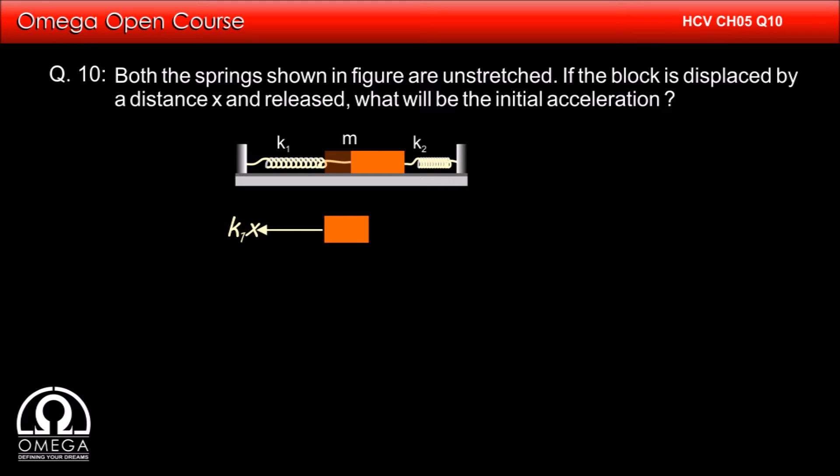Since the spring on the left is elongated by x, it pulls the block with force k₁x. Also, the spring on the right is compressed by x, so it will push the block with force k₂x.